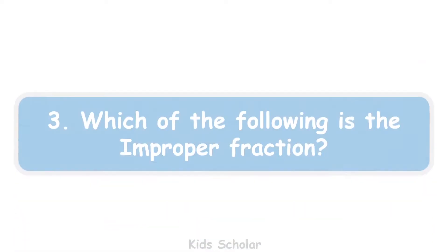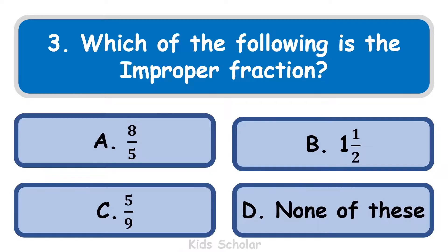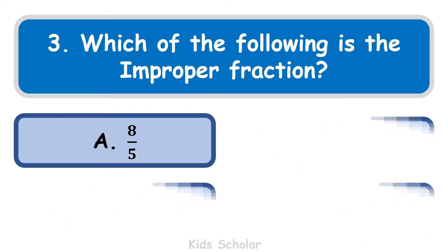Next question is: which of the following is an improper fraction? The options are 8 by 5, 1 and 1 by 2, 5 by 9, and none of these. The correct answer for this question is 8 by 5.